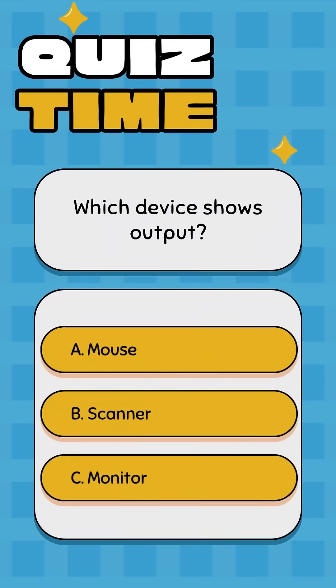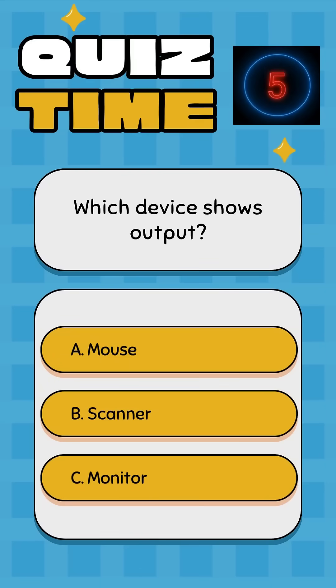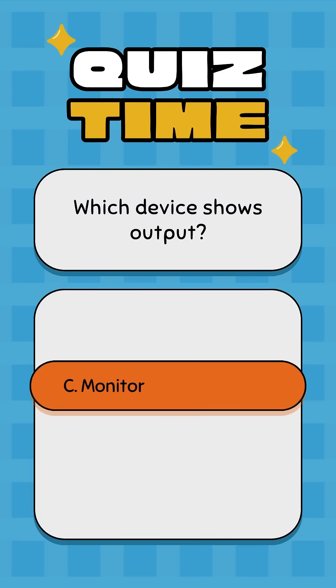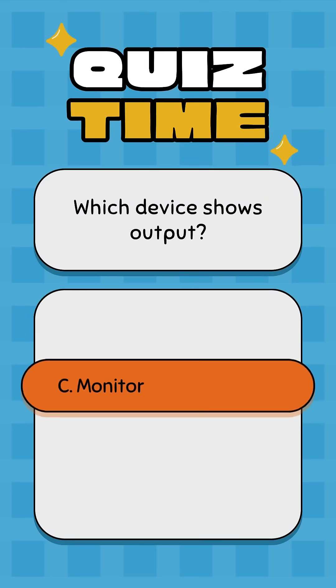Which device shows output? A: Mouse, B: Scanner, C: Monitor. Correct answer: C, Monitor.